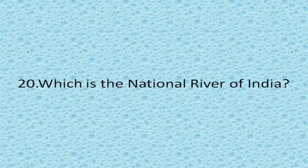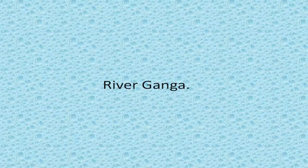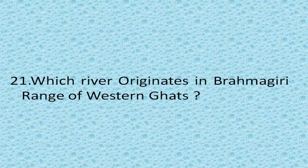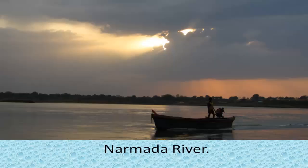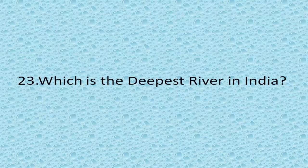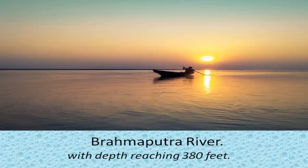Which is the national river of India? River Ganga. Which river originates in the Brahmagiri range of Western Ghats? River Kaveri. Which is the longest west-flowing river of peninsular India? Narmada River. Which is the deepest river in India? Brahmaputra River, with depth reaching 380 feet.